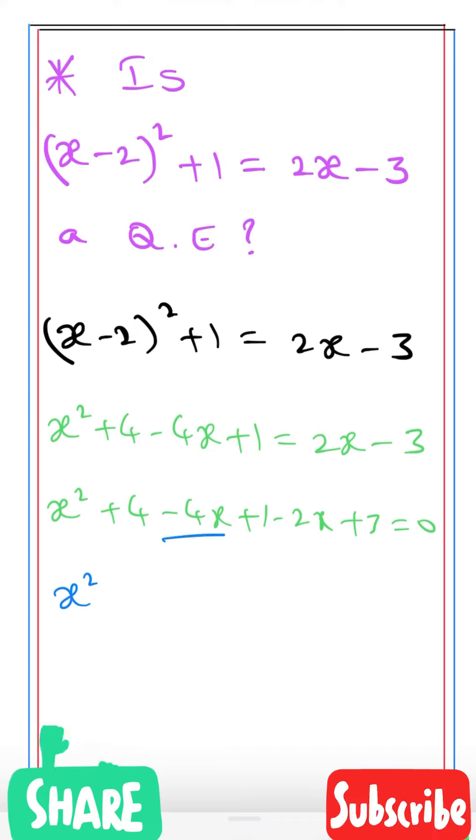Minus 4x minus 2x is -6x. 4 plus 1 is 5, 5 plus 3 is 8. So x² - 6x + 8 = 0. Here the highest power of x is 2, so definitely this is a quadratic equation.